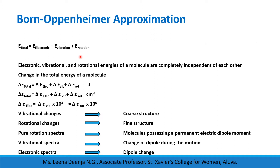This implies that the electronic energy, vibrational energy, and rotational energies of a molecule are completely independent of each other. A change in total energy of the molecule can be written as: ΔE_total = ΔE_electronic + ΔE_vibrational + ΔE_rotational. The unit here is joule.